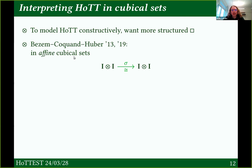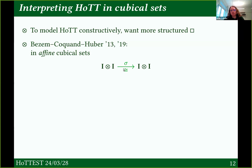In affine cubical sets, we have everything in the minimal cube category, but we can also permute axes. There's a morphism from the two-cube to itself that flips it by flipping the axes — you have to think of these as directed, with two axes that can be rotated. That was the first start. This model turned out to be a little problematic for higher inductive types.